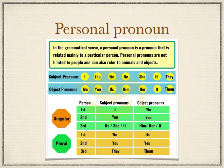Personal pronouns — in the grammatical sense, a personal pronoun is a pronoun that is related mainly to a particular person. Personal pronouns are not limited to people and can also refer to animals and objects. Here, you will study subject pronouns and object pronouns.